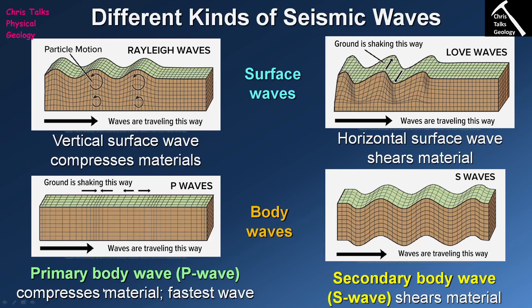To summarize: P waves can move through solids and liquids; S waves can only move through solids. Another factor is that P waves, being compressional, are much more efficient, so they move a lot faster than S waves.